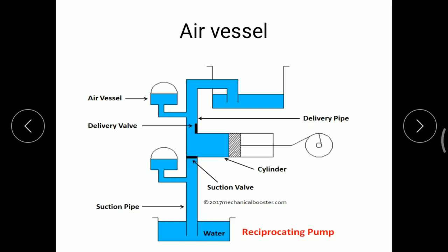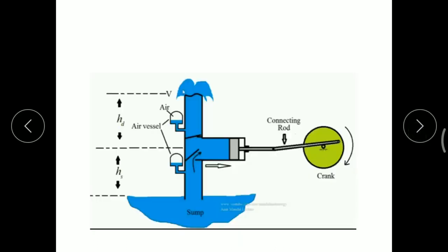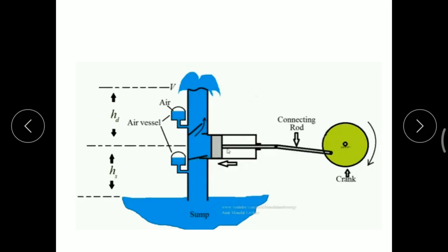Now we will see the working of the air vessel in a reciprocating pump. When the piston moves from top dead center towards bottom dead center, the suction valve gets opened and water comes from the tank towards the cylinder cavity. When the piston moves from bottom dead center towards top dead center, the delivery valve gets opened and high-pressure water flows into the delivery pipe. During the middle of the delivery stroke, when the pump forces water into the delivery pipe at a velocity greater than the average velocity, excess water flows into the air vessel and compresses the trapped air in the upper portion of the chamber.